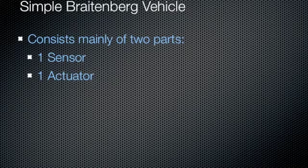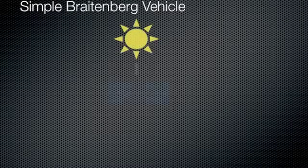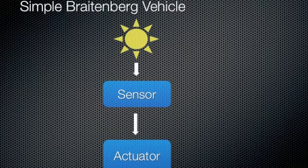Next I want to describe the most simple Breitenberg vehicle. Such a vehicle consists of two major parts: one sensor and one actuator. When we are using for example a light sensor, this sensor controls the actuator directly. This means the brighter it is, the faster the actuator — for example, wheels — are driven. It can be said that the vehicle is looking for bright places.